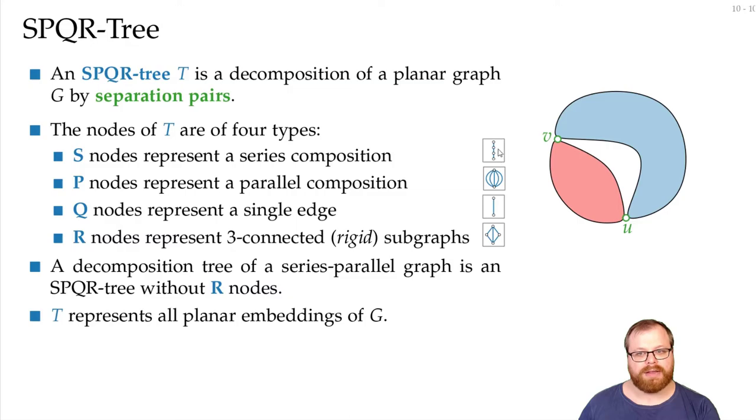And the path, there's also a single embedding. So, from these P nodes, if we just change the order there, we get all planar embeddings of the graph.